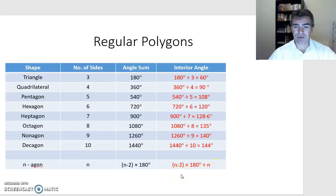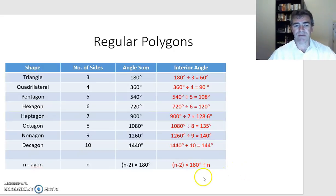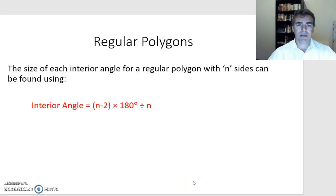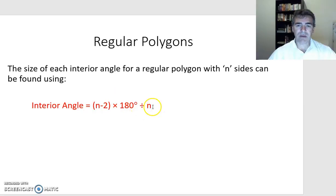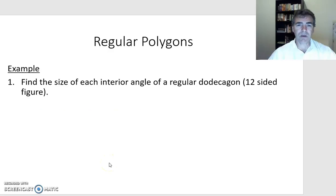To work it out for any number of sides, we take our angle sum and divide it by the number of sides — that gives us the size of the interior angle for any regular polygon. For the equilateral triangle: (3 − 2) × 180 = 180 degrees, divided by 3 equals 60 degrees. So the rule is: interior angle = angle sum ÷ number of sides.